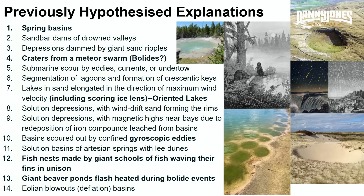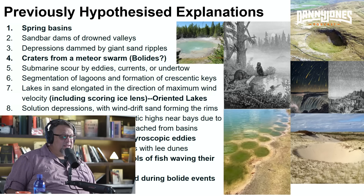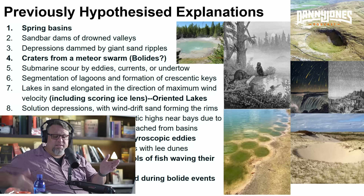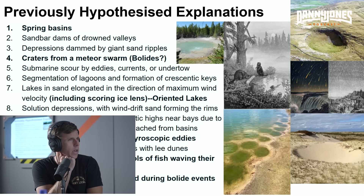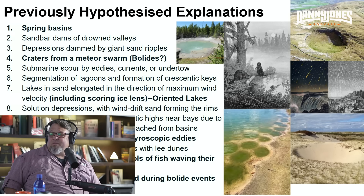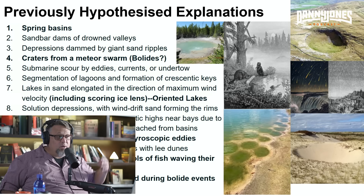There's a list of hypotheses from the 1930s to now — spring basins, beaver ponds, and others. It's been back and forth between terrestrial versus catastrophic explanations. Some people even thought they were beaver ponds that were flash-steamed from a bolide light event. Some people thought they were giant fish or whales swimming around in circles making nests in the terrain of South Carolina, North Carolina, and Georgia. It was constantly going back and forth between extraterrestrial and terrestrial explanations.